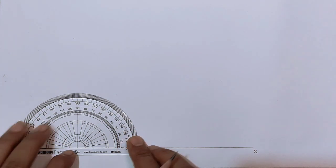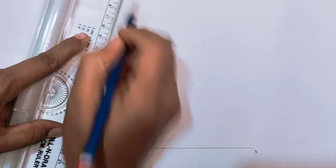So let's start our actual construction. Draw a line OX and OY inclined to each other at an angle of 75 degrees.